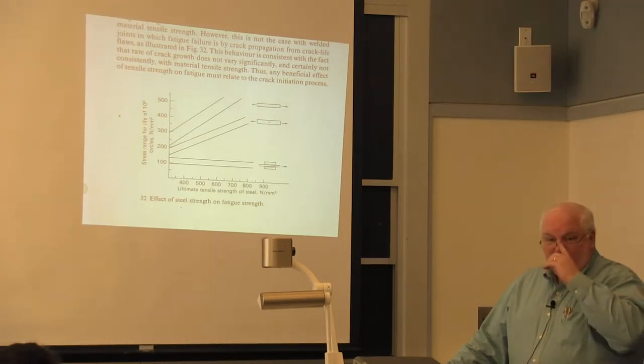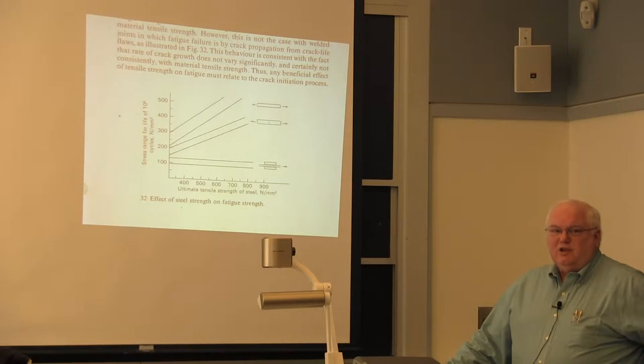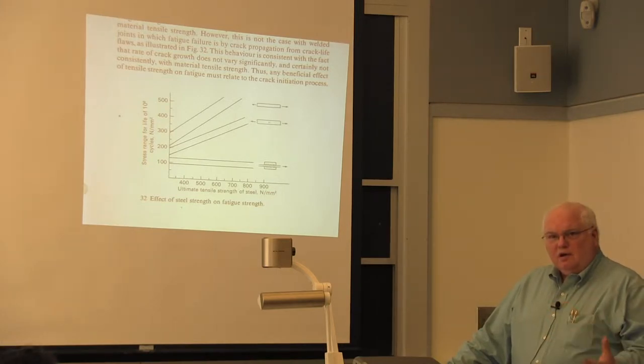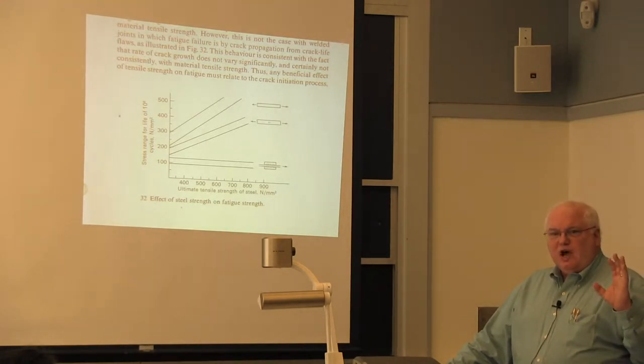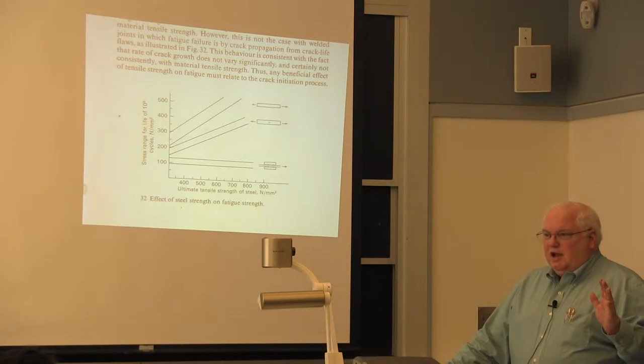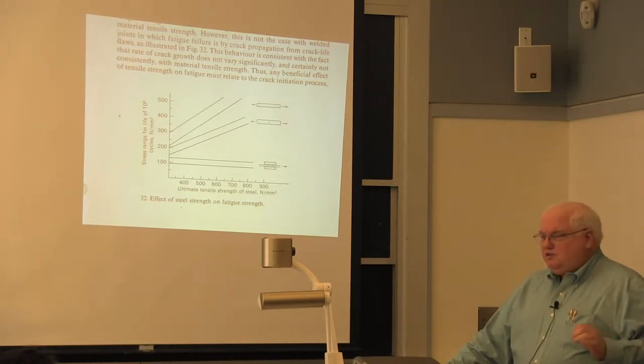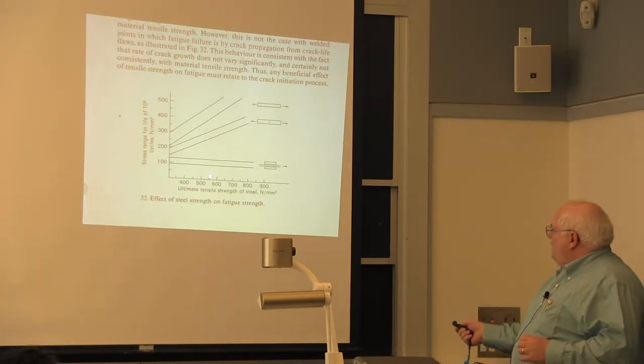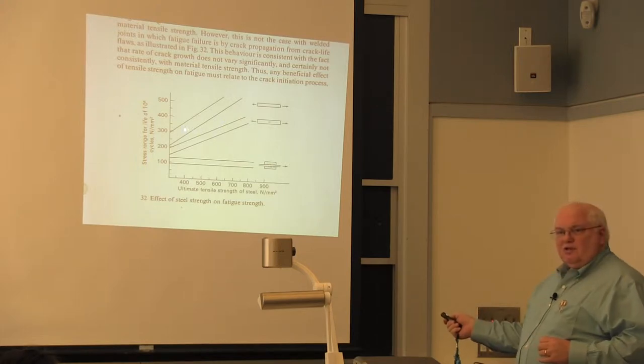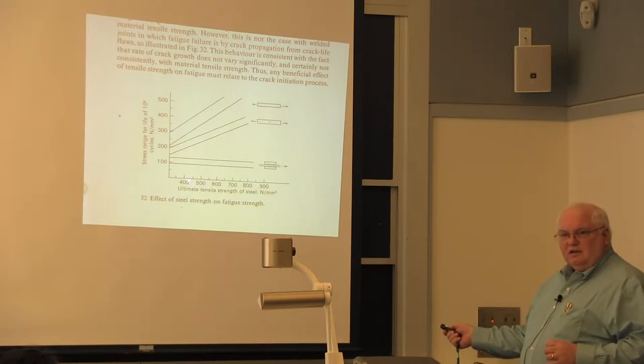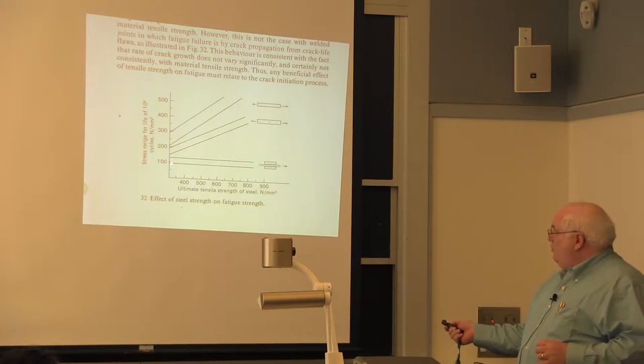Now, General Motors and Ford sort of ran into this in the mid-80s when they were trying to lightweight automobiles. And so they said, oh, we'll save weight on the cars. We'll use high-strength steel. And they did. And they spot-welded the high-strength steel. And they assumed that they would get the same proportional strength increase in the weld as they got as the base metal strength. But you don't.